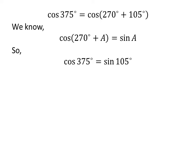So cosine of 375 degrees is equal to sine of 105 degrees. Again, 105 degrees is equal to 60 degrees plus 45 degrees, so cosine of 375 degrees is equal to sine of 60 degrees plus 45 degrees.